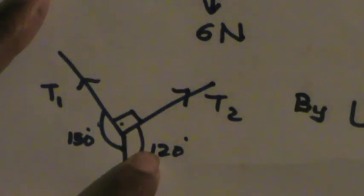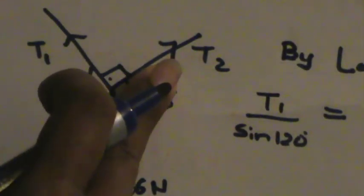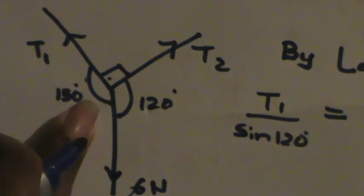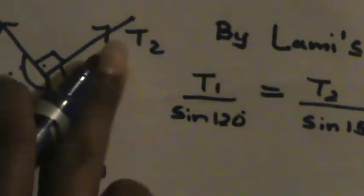Now we can apply Lamy's theorem. By Lamy's theorem: T1 divided by sine of the angle opposite to it — which is 120 — is equal to T2 divided by the angle opposite to it — which is 150 — is equal to 6 newtons divided by the angle opposite to it. Since T1 and T2 are perpendicular, that angle is 90 degrees, and sine 90 equals 1, so 6 divided by sine 90 is 6 newtons.